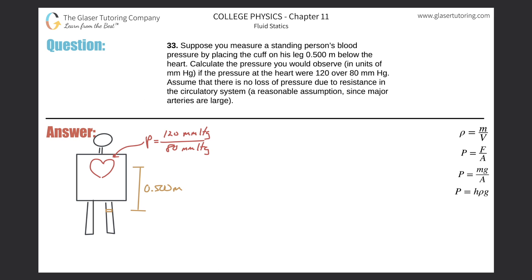Number 33. Suppose you measure a standing person's blood pressure by placing the cuff on his leg, 0.5 meters below the heart. Calculate the pressure you would observe in units of millimeters of mercury if the pressure at the heart were 120 over 80 millimeters of mercury. Assume that there is no loss of pressure due to resistance in the circulatory system — a reasonable assumption since major arteries are large.